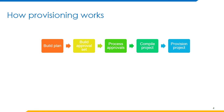At a high level, provisioning requests are processed as follows: the provisioning request is made through one of several actions or activities; the request is created as a provisioning plan; the provisioning broker evaluates and compiles the provisioning plan, which often involves dividing it into several partitioned plans, where each partitioned plan addresses a single application; each partitioned provisioning plan is then passed to the appropriate handler — for integration configuration or read/write connectors, changes are written to the destination system.